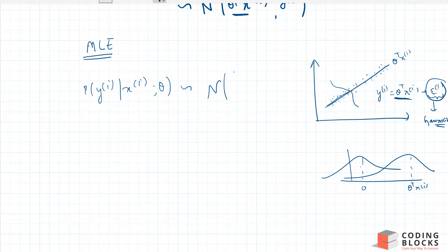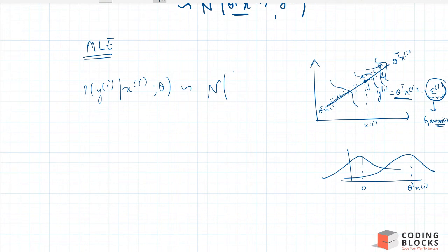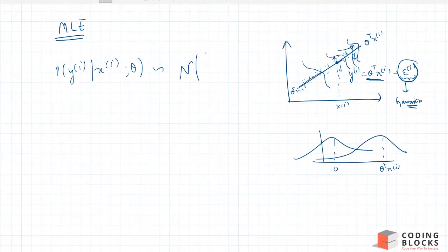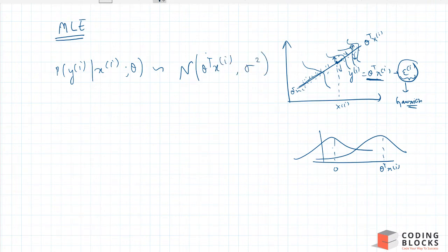The mean point is theta transpose xi, and most of the points are scattered around this mean due to Gaussian noise, which captures unmodeled effects and random noise. We assume this noise is iid — identical and independently distributed. So yi given xi belongs to a normal distribution with mean theta transpose xi and variance sigma squared.